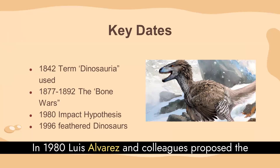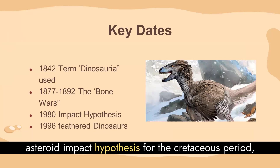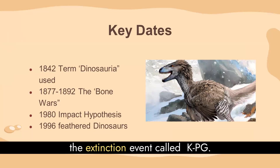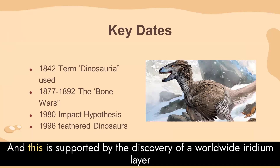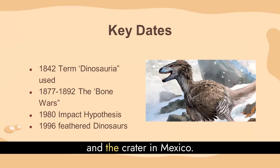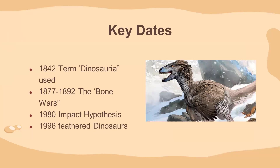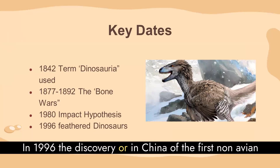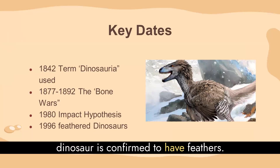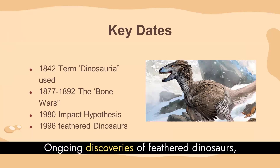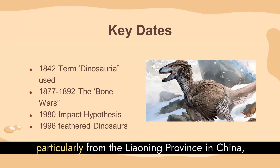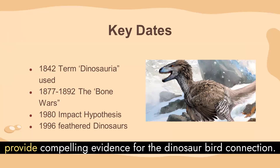In 1980, Luis Alvarez and colleagues proposed the asteroid impact hypothesis for the Cretaceous extinction event, called the KPG, supported by the discovery of a worldwide iridium layer and the crater in Mexico. In 1996, the discovery in China of the first non-avian dinosaur was confirmed to have feathers. Ongoing discoveries of feathered dinosaurs, particularly from the Liaoning province in China, provide compelling evidence for the dinosaur-bird connection.